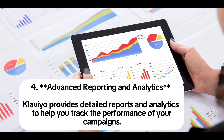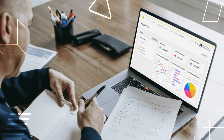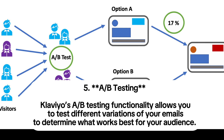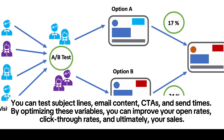Key feature 4: Advanced reporting and analytics. Klaviyo provides detailed reports and analytics to help you track the performance of your campaigns. You can see open rates, click-through rates, conversion rates, and revenue generated from each email or campaign. Key feature 5: A/B testing. Klaviyo's A/B testing functionality allows you to test different variations of your emails to determine what works best for your audience. You can test subject lines, email content, CTAs, and send times. By optimizing these variables, you can improve your open rates, click-through rates, and ultimately your sales.